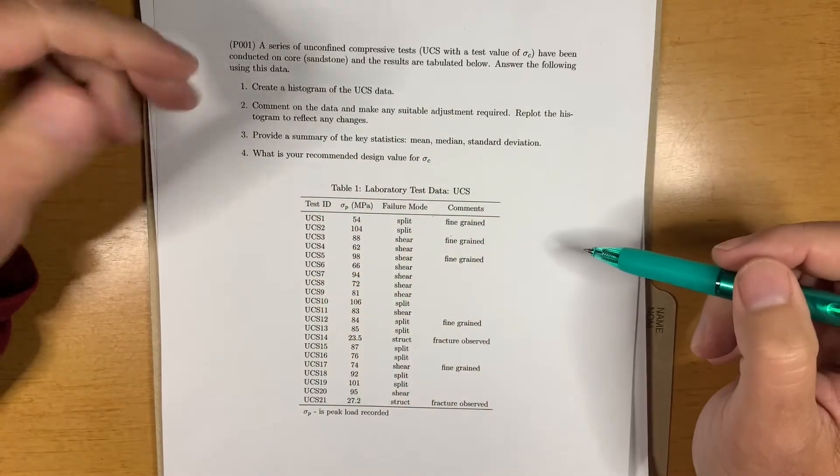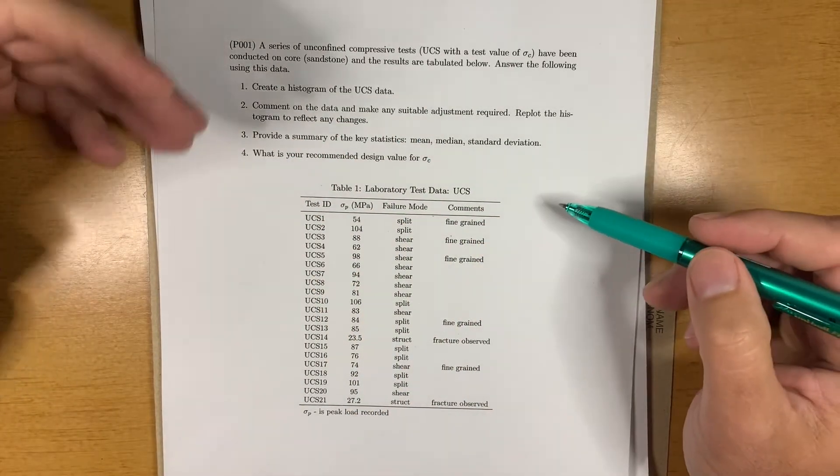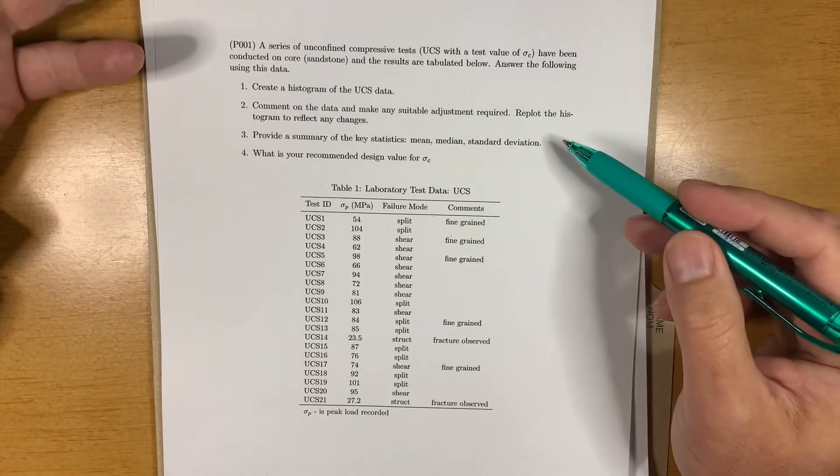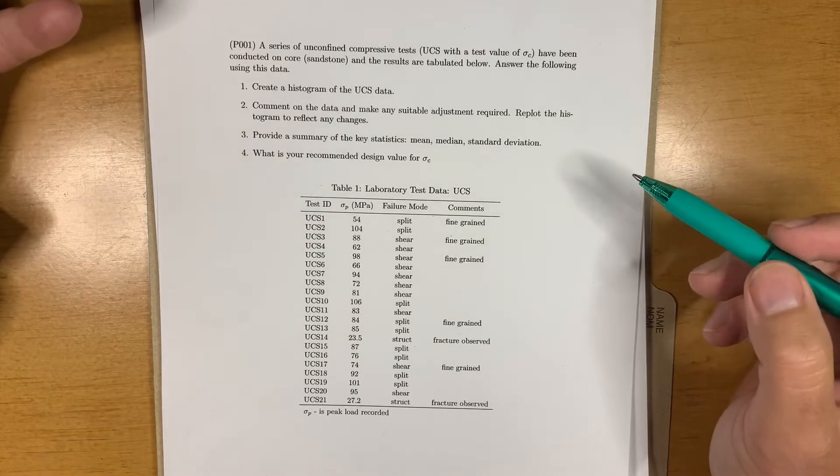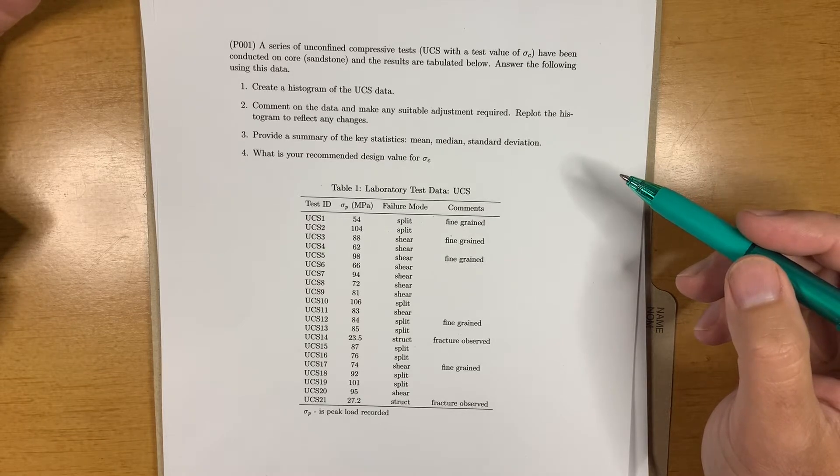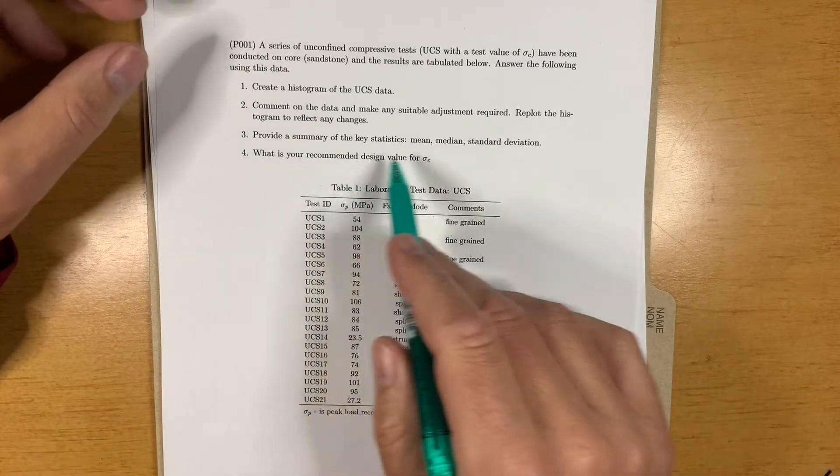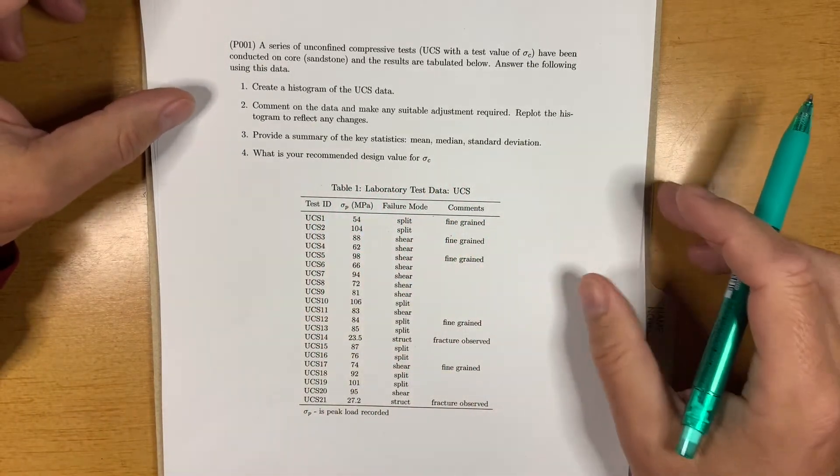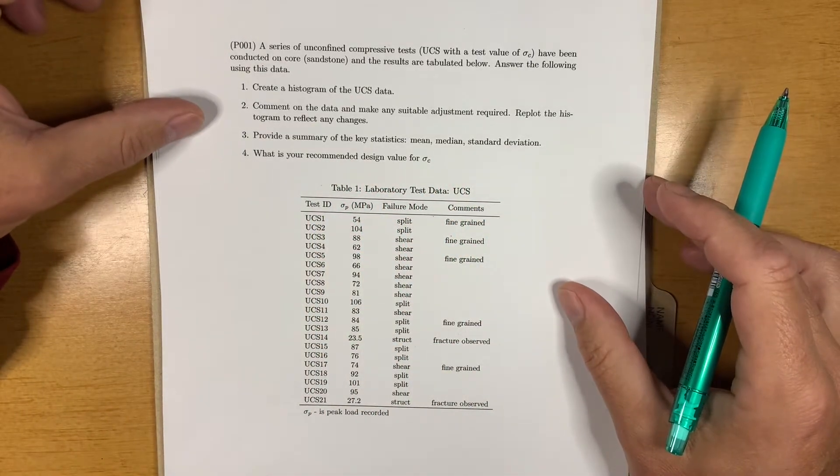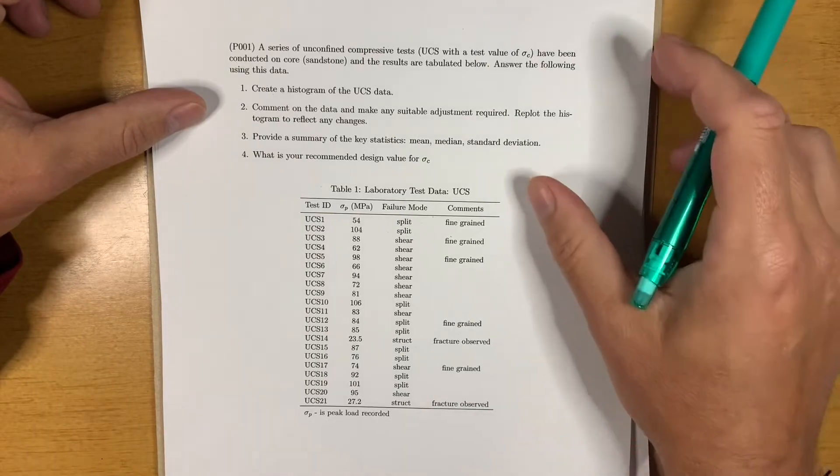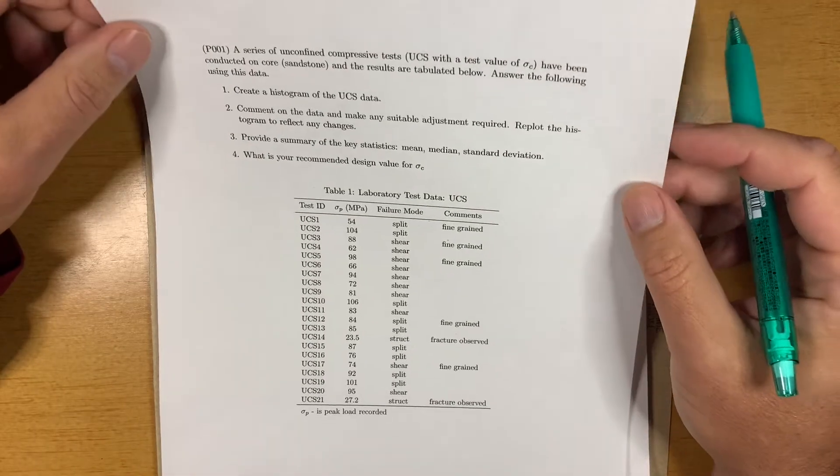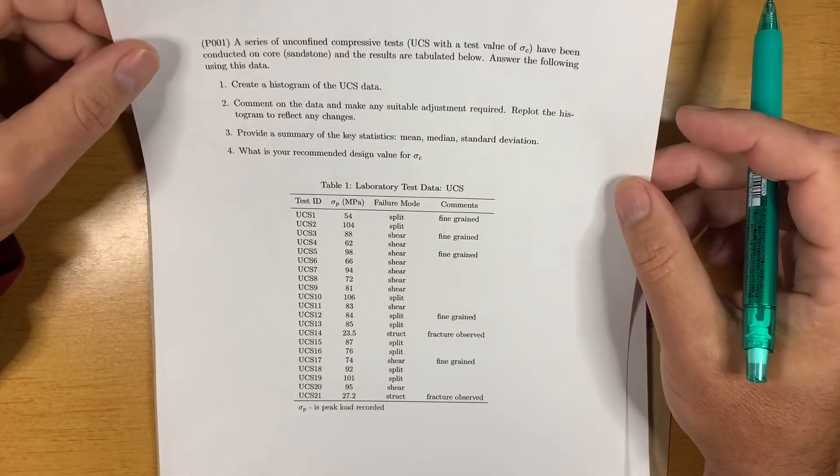We're asked to create a histogram, make some comments on the data, and make any adjustments to the data that we think are valid. And ultimately, to do some statistics, and then to provide a recommended design value for sigma C, or for the unconfined compressive strength.